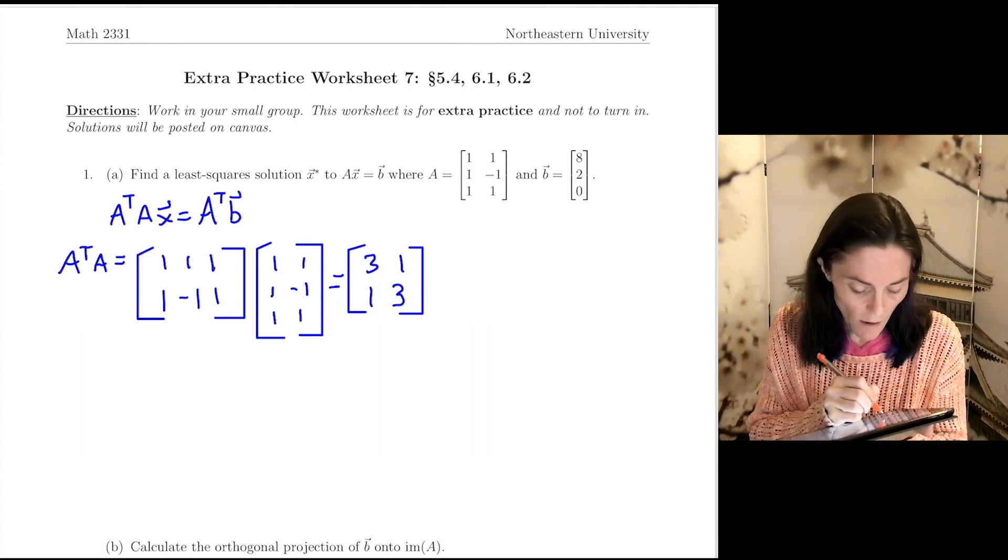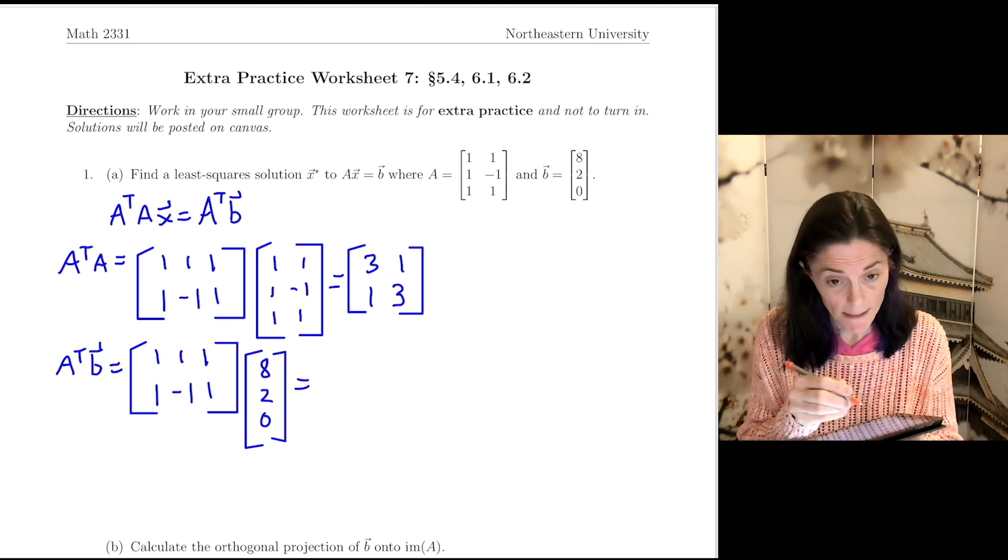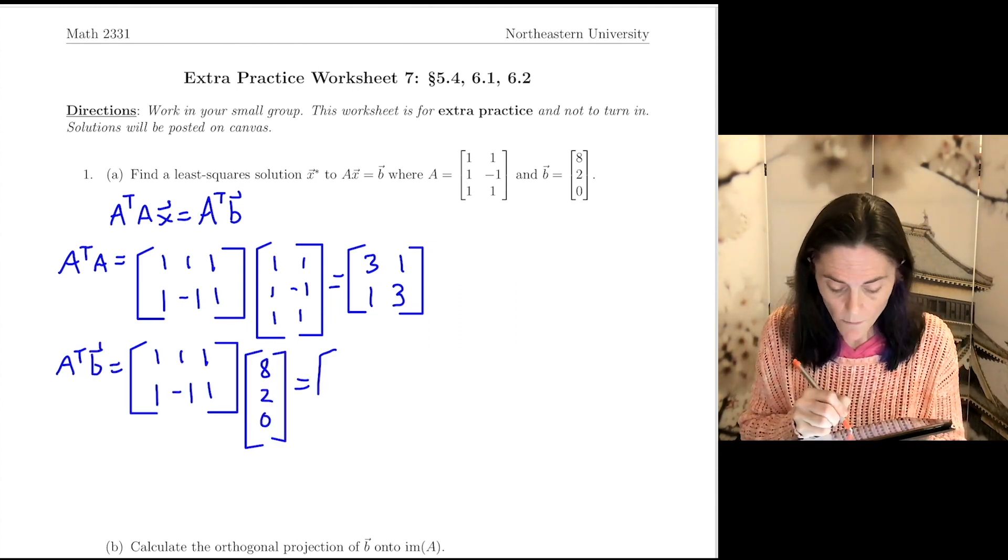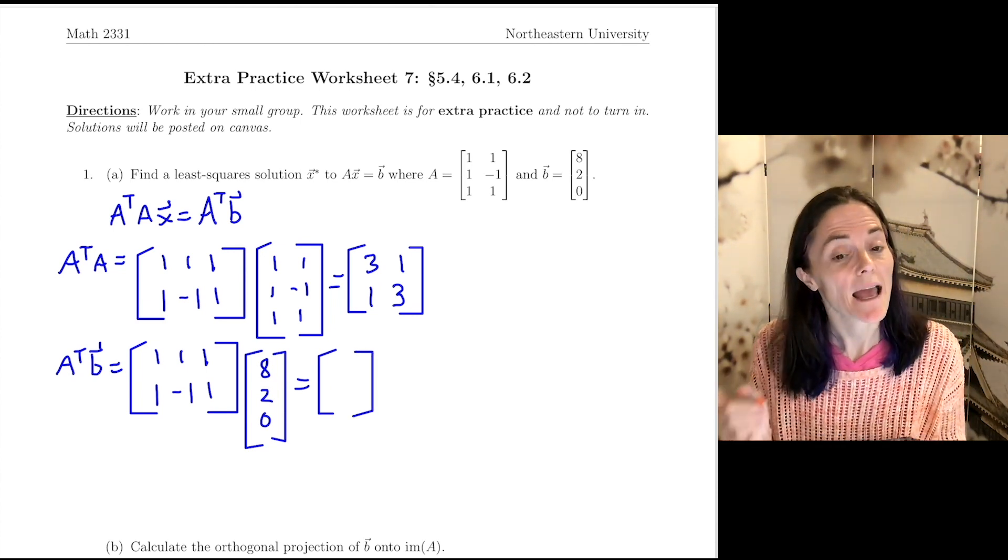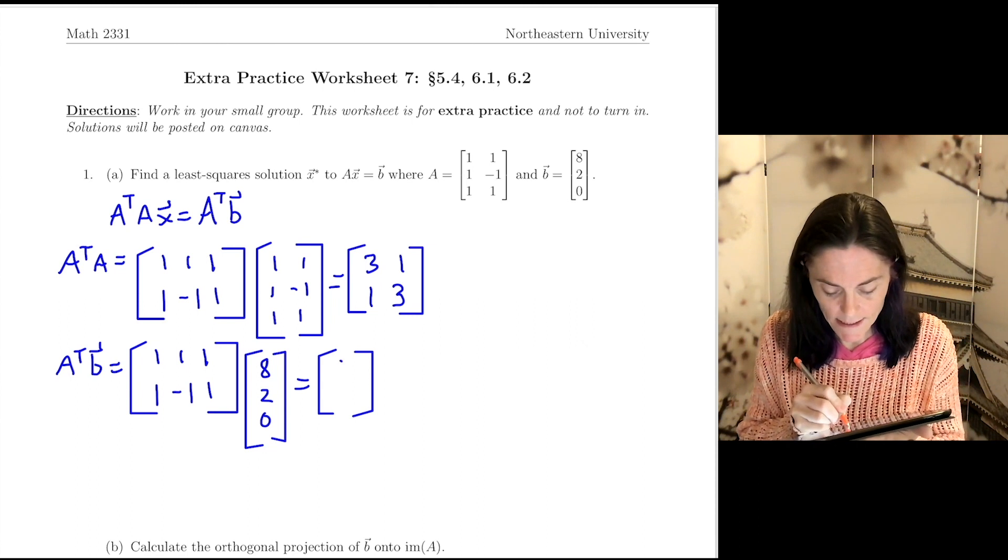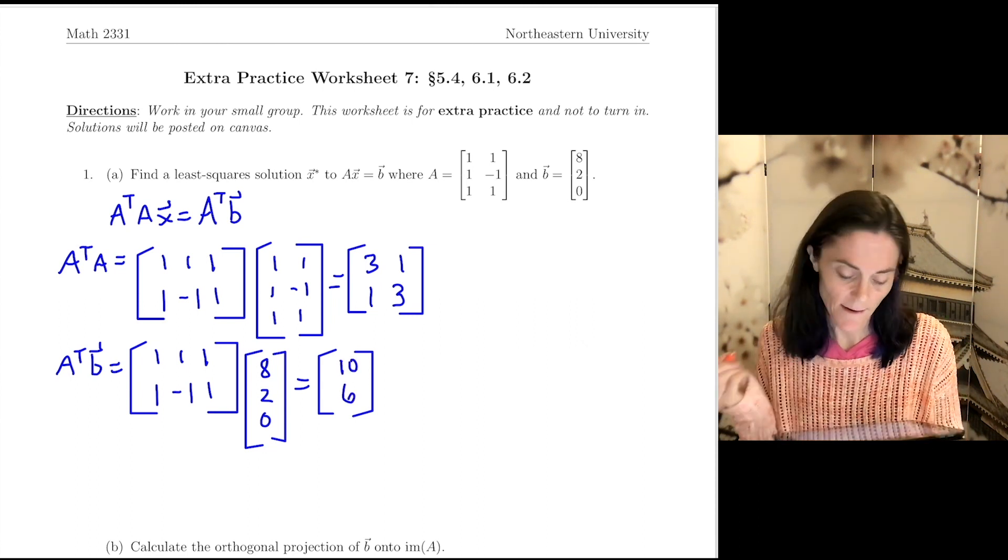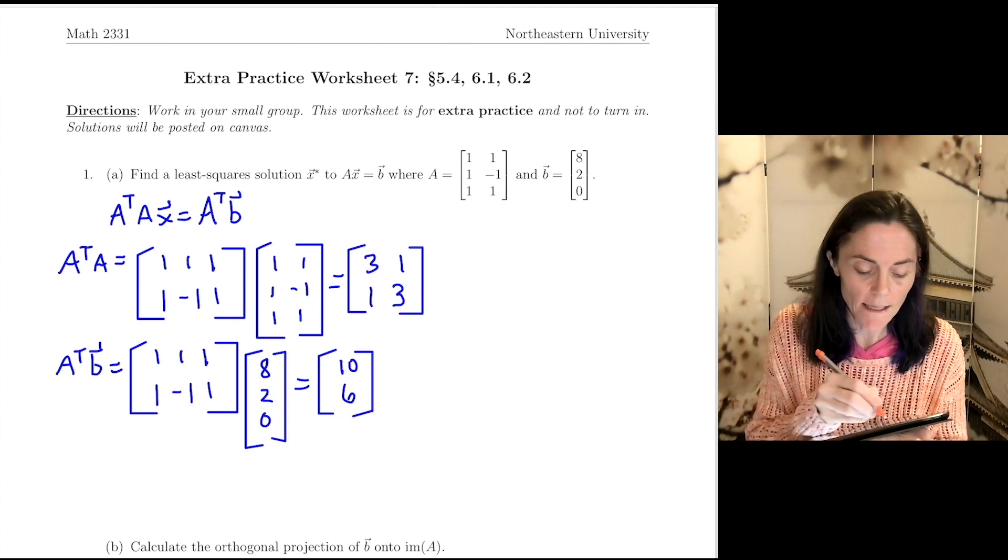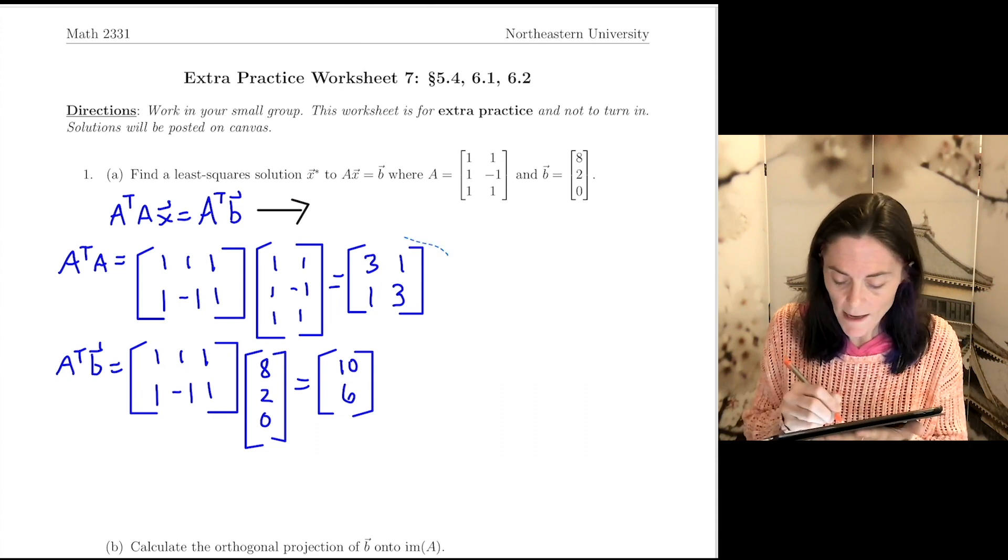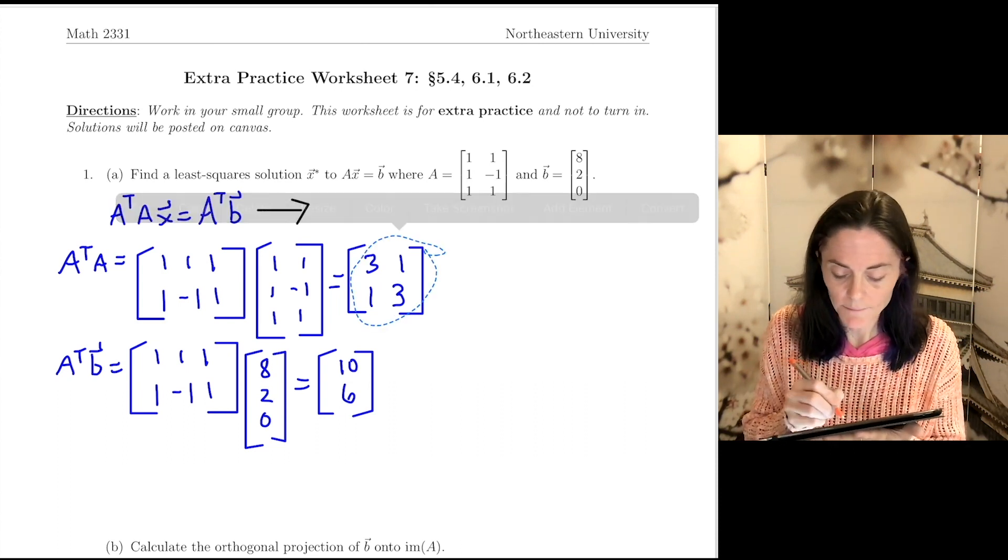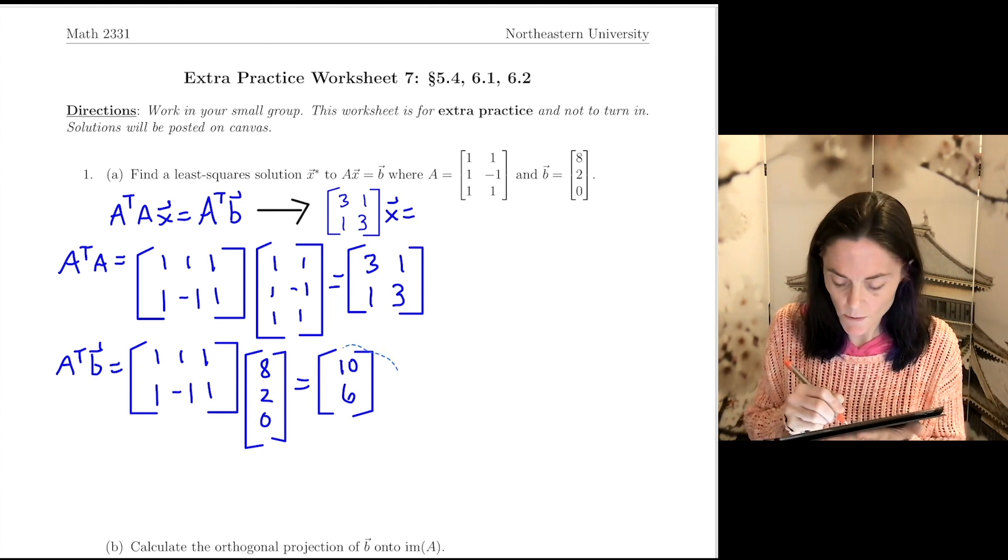And then we can also calculate A transpose B, which would be this product. When I multiply, I will have a vector 2 by 1, and I get 8 plus 2, which is 10, and then I get 8 minus 2, which is 6. Okay, so my normal equation, maybe I will write this up here. We have A transpose A times vector X, and this will equal A transpose B. This is the normal equation.